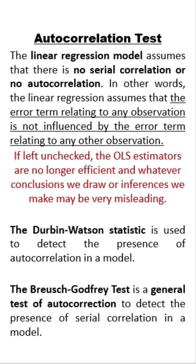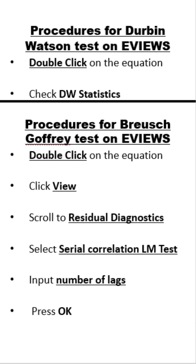The Durbin-Watson statistic is used to detect the presence of autocorrelation in the model. The Breusch-Godfrey test is a general test of autocorrelation to detect the presence of serial correlation in a model.